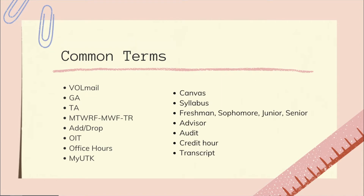The terms freshman, sophomore, junior, and senior are how we talk about our years at the university as an undergraduate student. I'm a junior, which means I've been here for three years, and this is normally based on credit hours: below 30 credit hours is freshman, 30 to 60 is sophomore, and so on. These terms are generally loose, so you may not fall into one specific category.